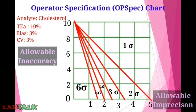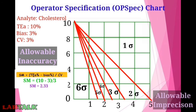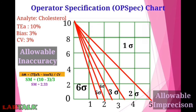This is how we have plotted the operator specification chart for cholesterol. Now we plot the sigma matrix for cholesterol, which is 2.33, where bias is 3% and CV% is 3%. Draw a line from 3 on the y-axis parallel to the x-axis, and from 3 on the x-axis draw a line parallel to the y-axis. The intersecting point is 2.33, which is the sigma matrix for cholesterol.